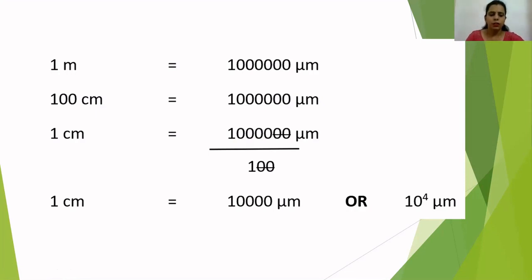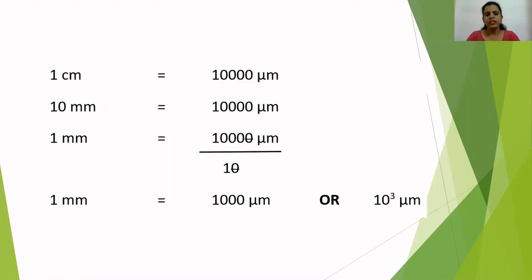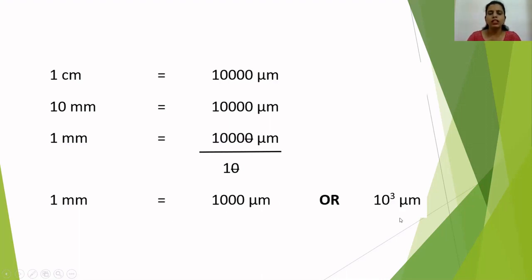From the previous result, one centimeter equals 10,000 micrometers. Since one centimeter equals 10 millimeters, we have: 10 millimeters = 10,000 micrometers. Dividing both sides by 10: one millimeter equals 1,000 micrometers. So 1 mm = 10³ µm, or 1,000 µm.